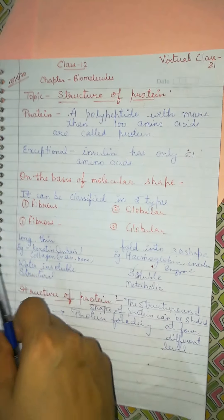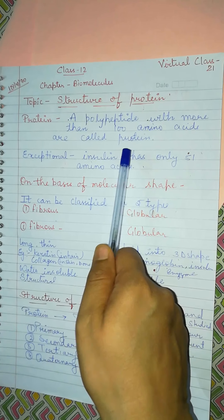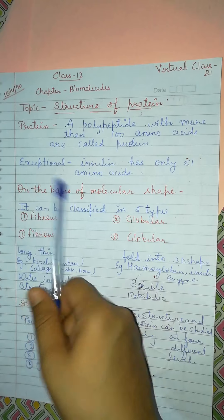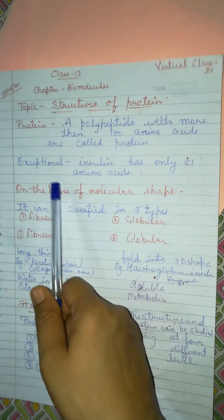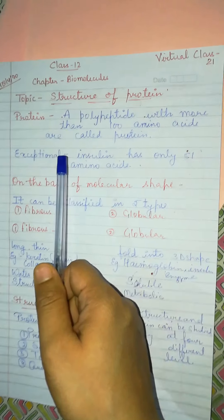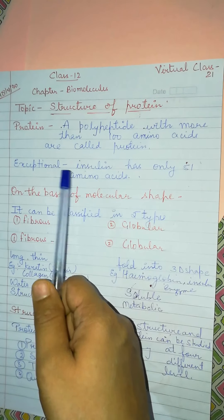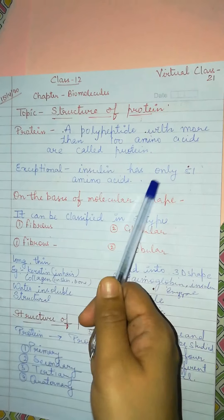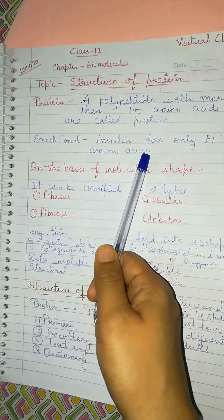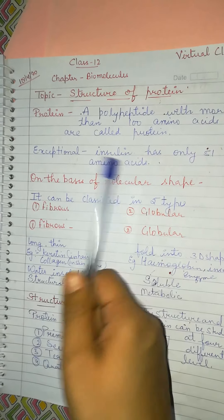Such polypeptides in which more than 100 amino acids are attached through peptide bonds are called proteins. There is an exception here — and chemistry is all about exceptions. There are some exceptions in chemistry. So insulin has only 51 amino acids and still it is a protein. It has only 51 amino acids yet it is considered a protein.